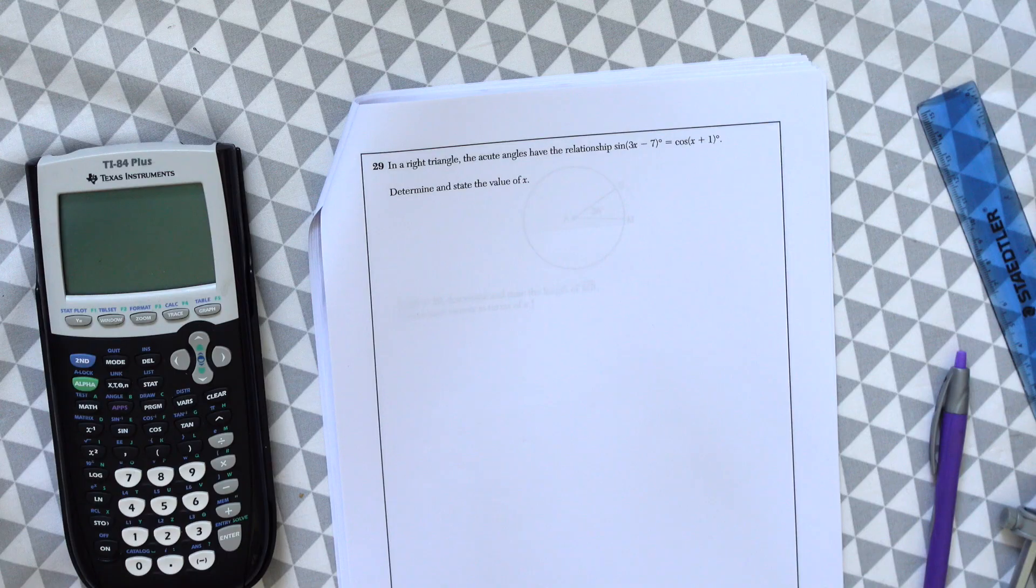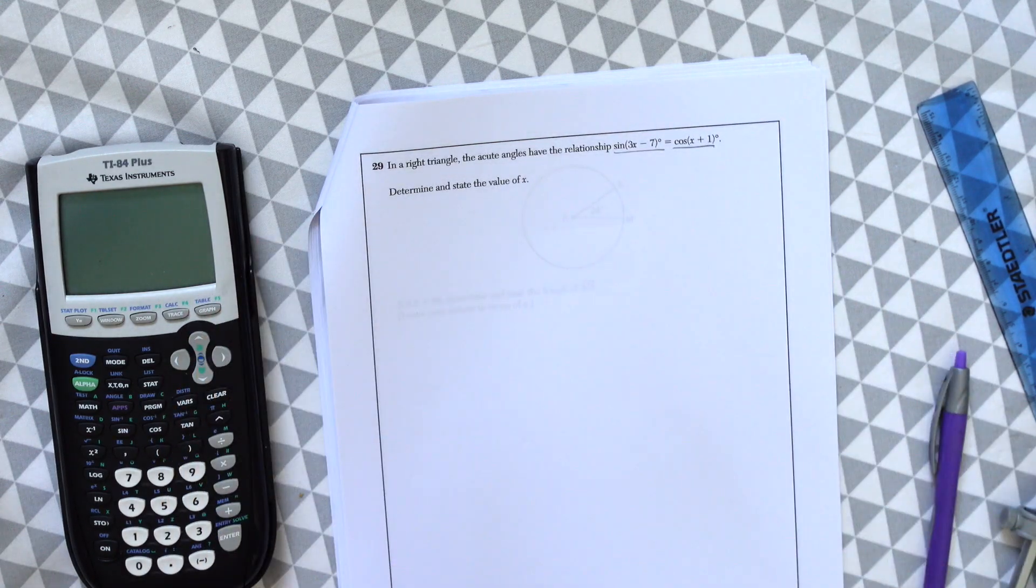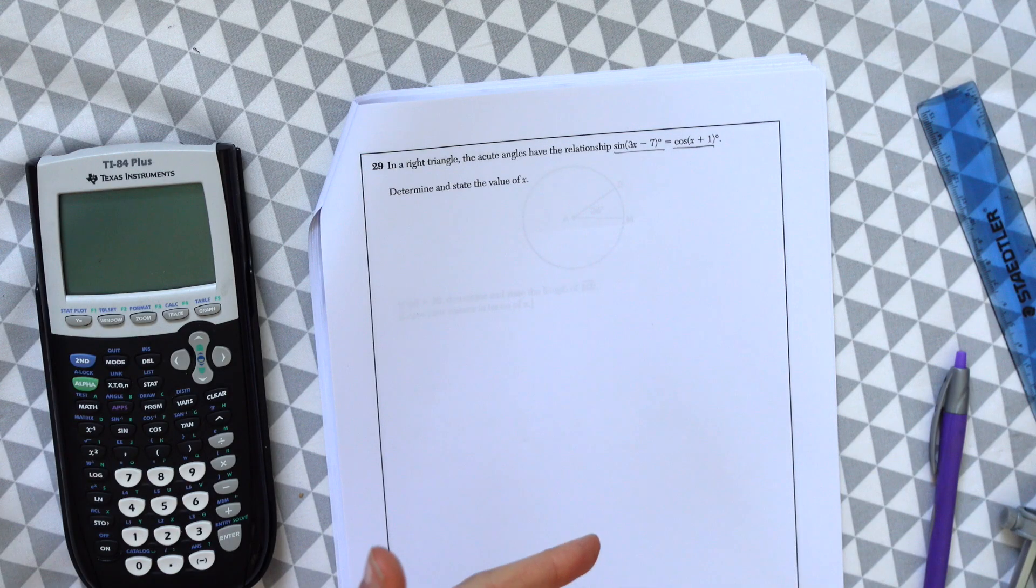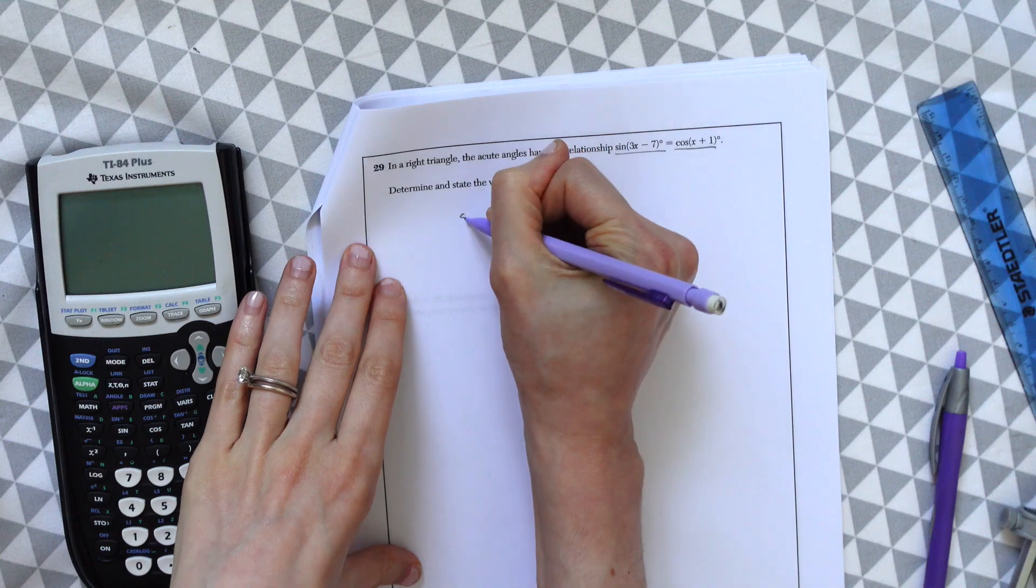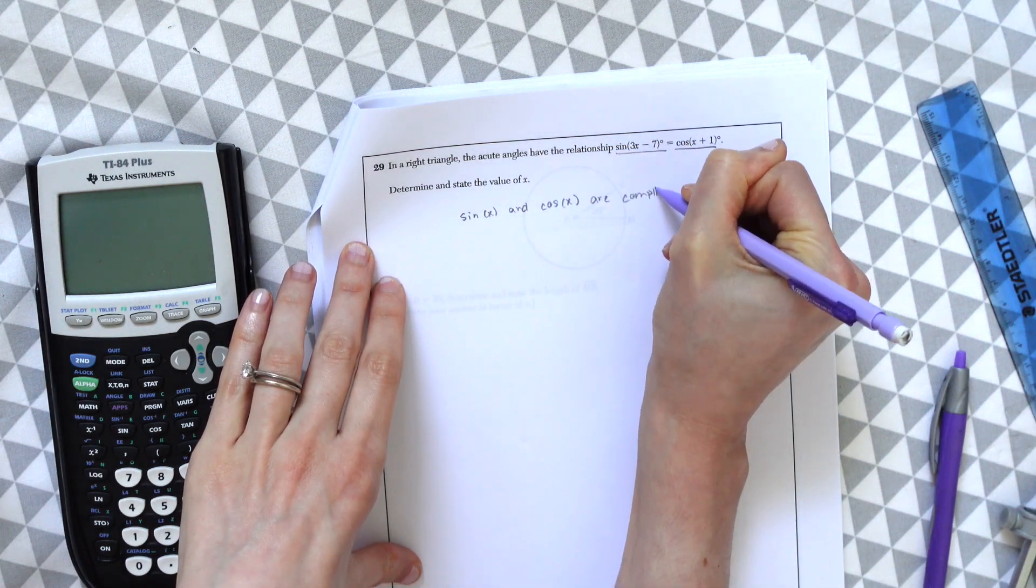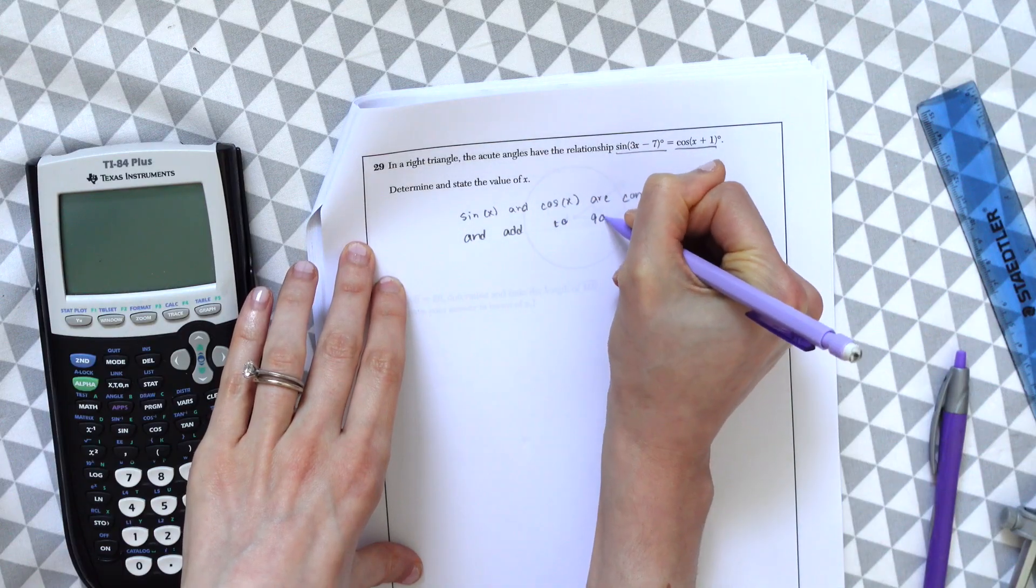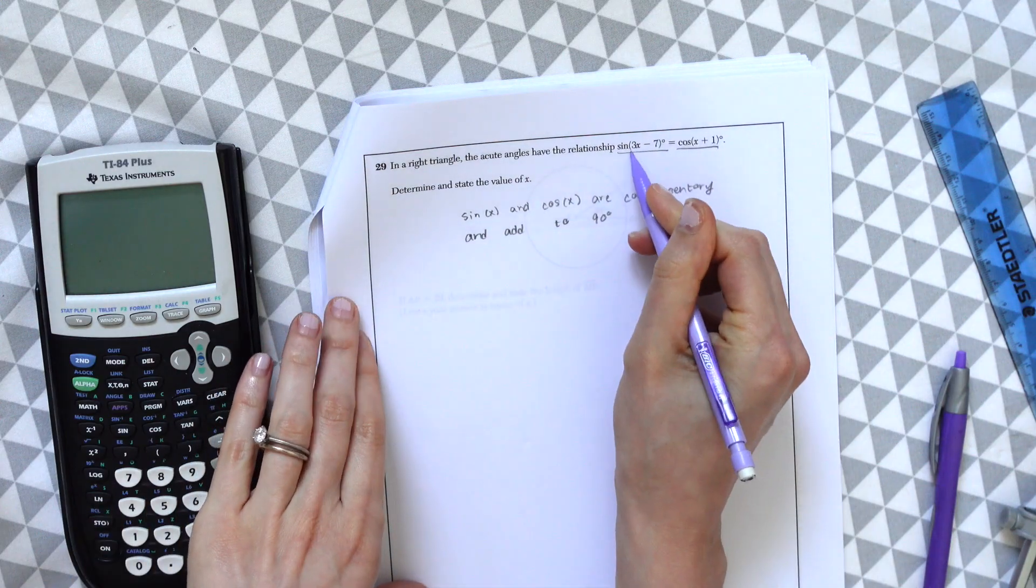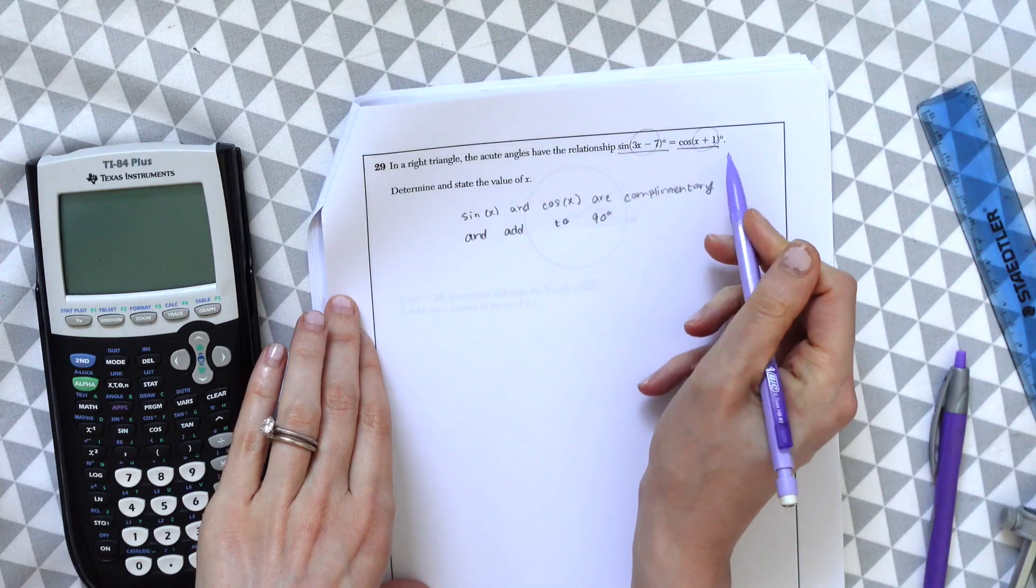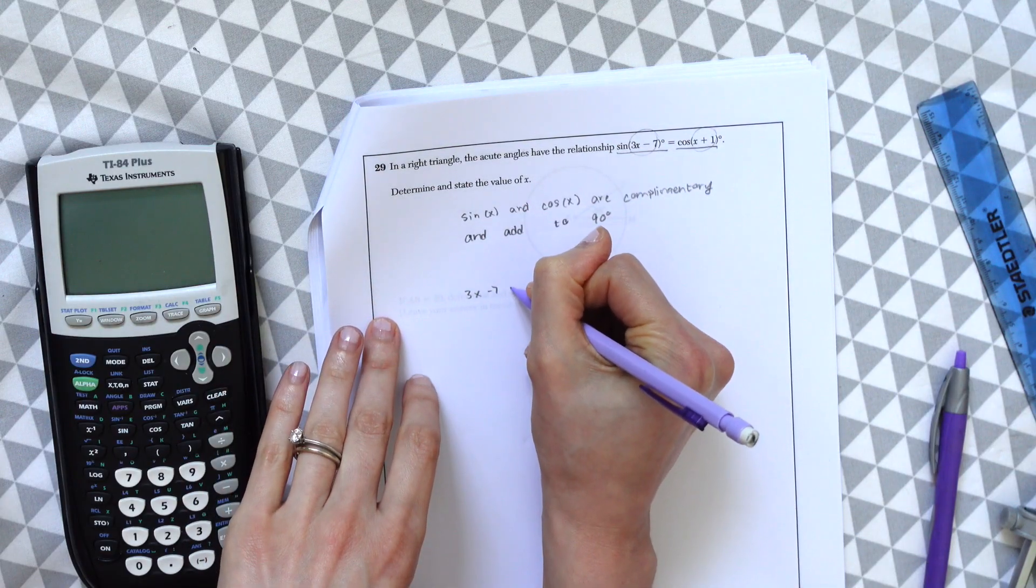So the nice thing about the information they gave us is that sine of x and cosine of x are co-functions that are complementary and add to 90 degrees. So what that means is we could just take the values within here, within the function, 3x minus 7, add them together, plus x plus 1 and set them equal to 90 degrees and then solve for x.